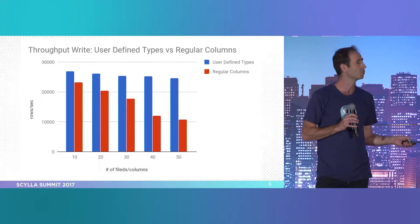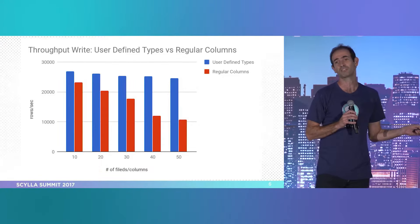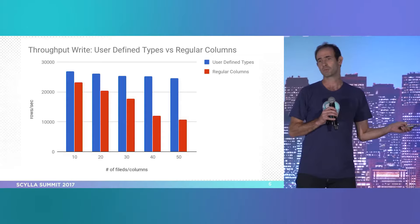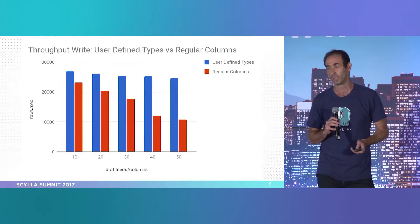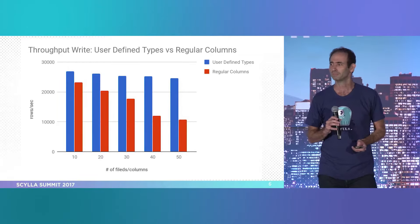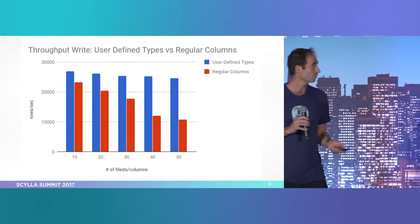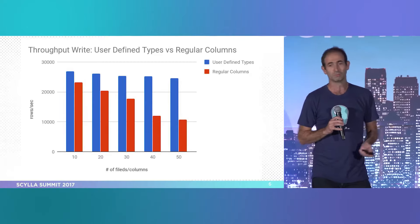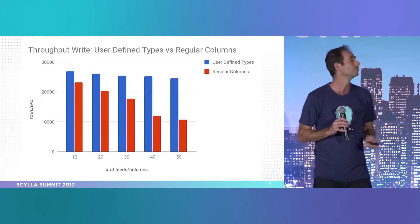But when we're talking about using 50 columns, you can get more than two and a half times performance in throughput. That's the write path.